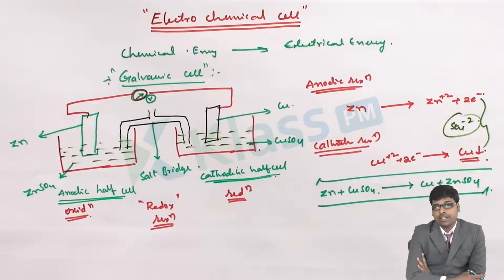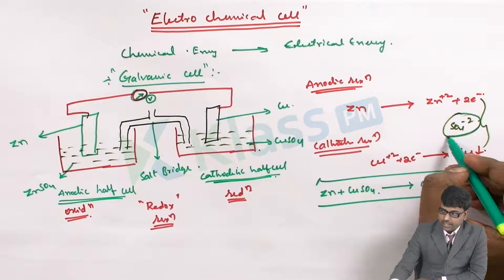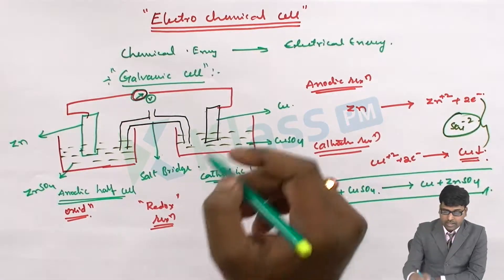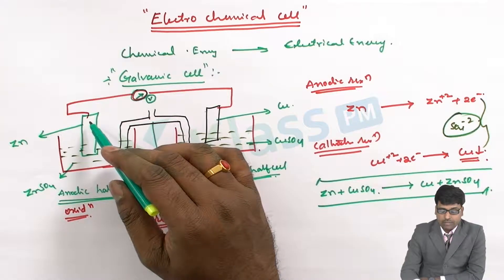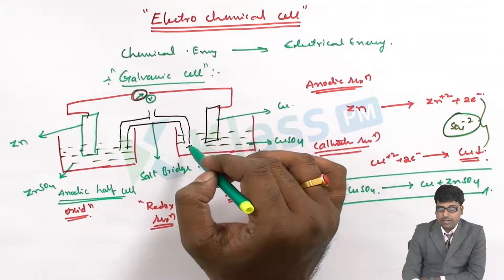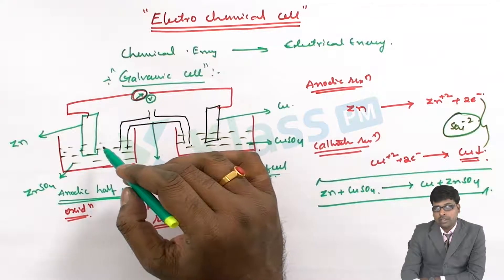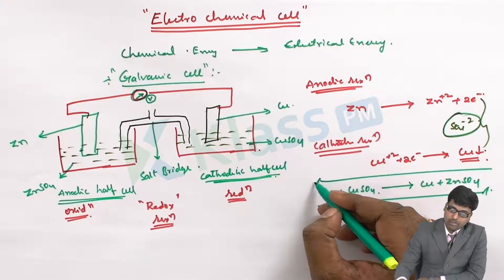On the external circuit the electrons will move. In the internal circuit, that is through the salt bridge, the common ions — SO₄²⁻ in this case — will travel from cathode to anode. The electrons travel from anode to cathode in the external circuit, and the ions travel from cathode to anode through the salt bridge, thereby completing the circuit.